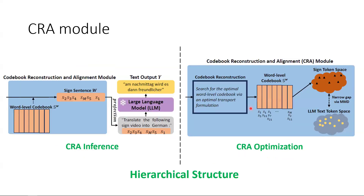The CRA module converts the character-level signed tokens into word-level signed tokens. It is challenging to find an optimal codebook containing words that are meaningful combinations of characters, so we adopt an optimal transport formulation to find an optimal signed codebook with minimal entropy and a small size. Furthermore, MMD loss is also applied between the signed tokens and the LLM text token space. These designs enable SignedLLM to produce signed sentences that embody the two key characteristics of spoken languages — discrete characteristics and a hierarchical structure — which enhances their compatibility with LLMs.